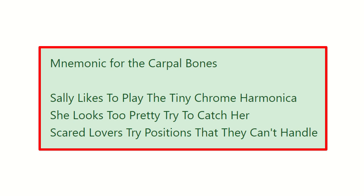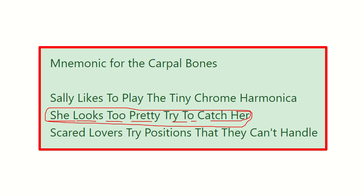There are three important mnemonics to remember the carpal bones, but the most favorable one is: 'She Looks Too Pretty, Try To Catch Her.' The other two are: 'Salt Celli Likes To Play The Tiny Comb Harmonica,' and 'Scared Lovers Try Positions That They Cannot Handle.' You can choose any one of these three mnemonics.